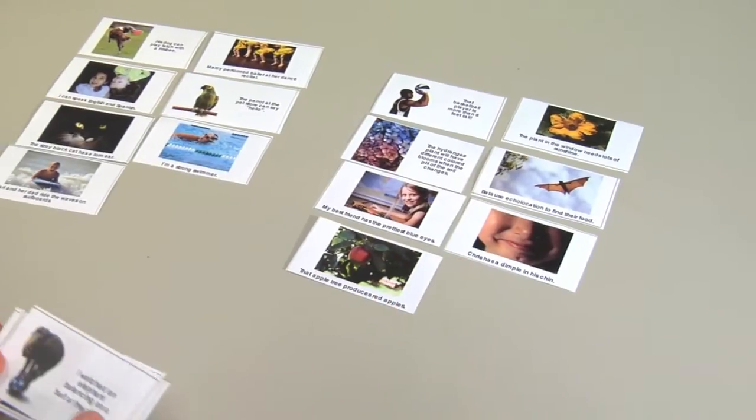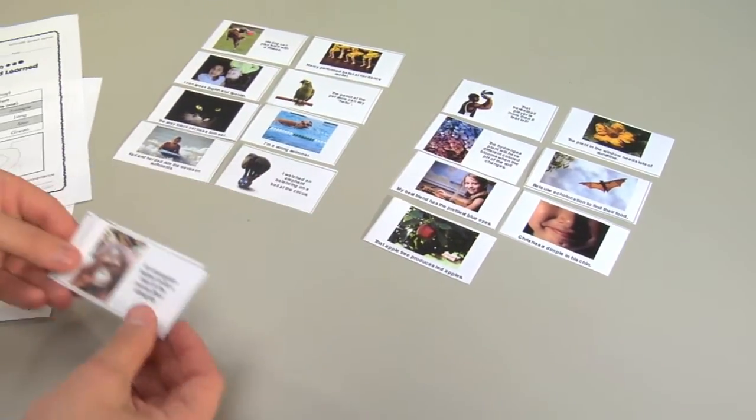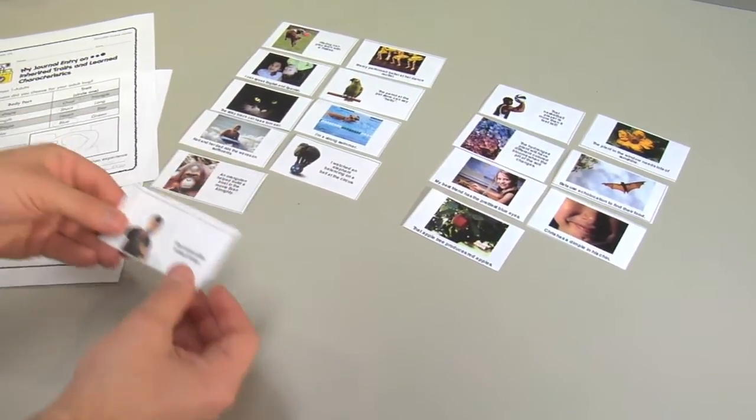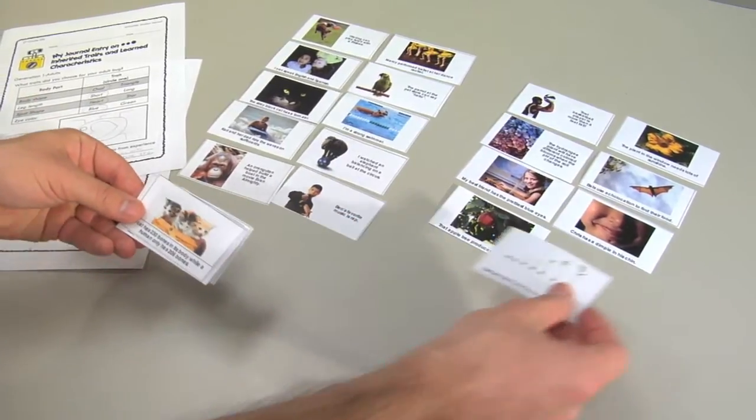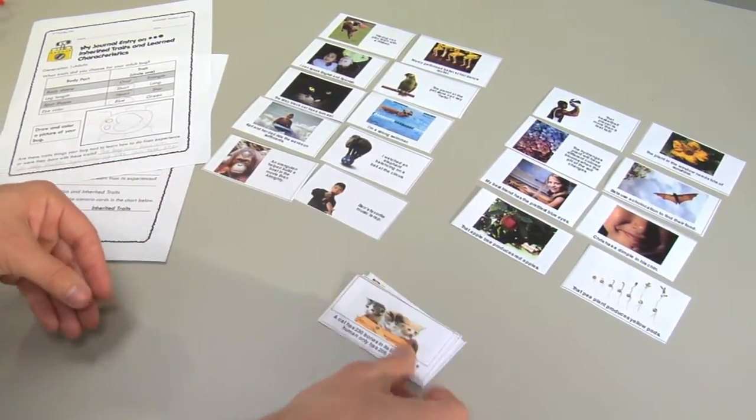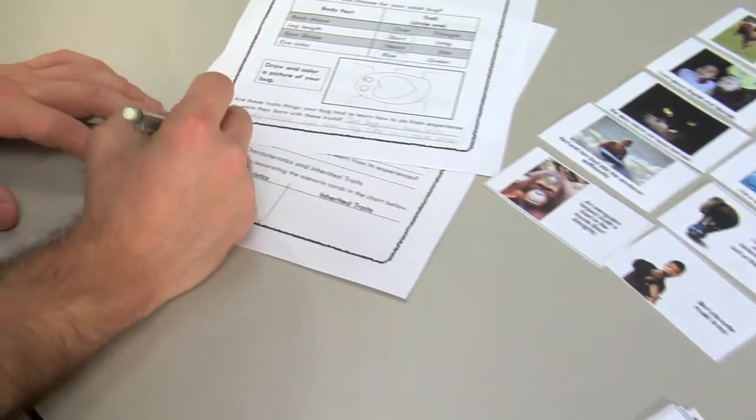Part 2: students use trait cards to identify and differentiate which characteristics were learned and which were inherited. Have them sort the cards into these two groups and record the results in their journals.